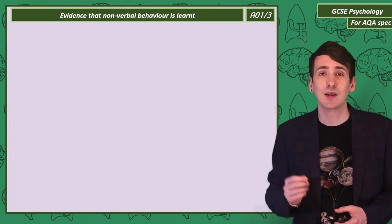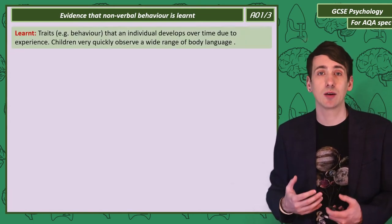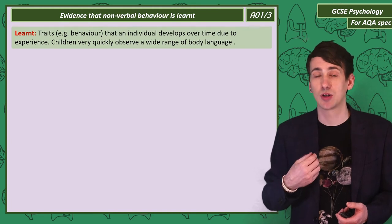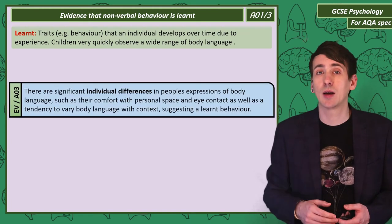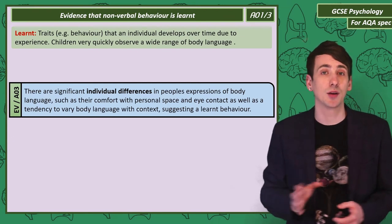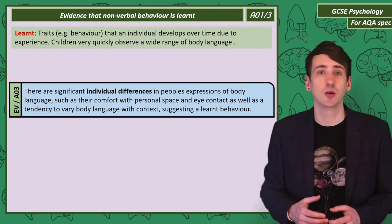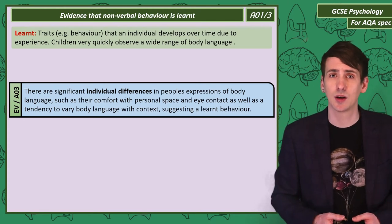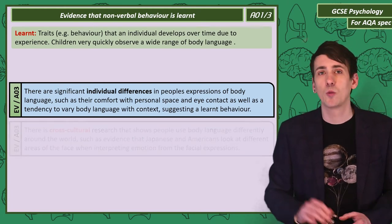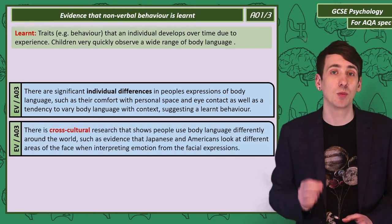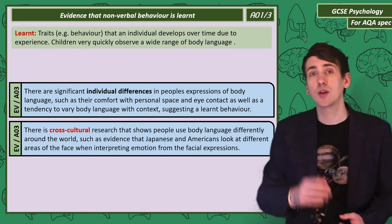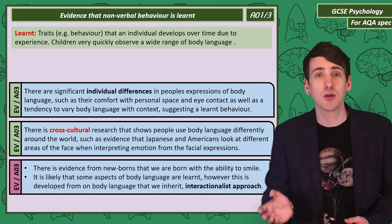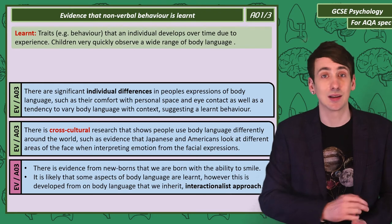The counter to body language being inherited is the idea that it is learned. Our body language develops through observing others' body language, observing people's responses to our body language, and then adapting. Strengths of the learning argument include the fact that body language varies from person to person — some people invade personal space, some use too much eye contact — and we vary our body language significantly by social context. Cross-cultural research also shows people use body language differently around the world. Criticisms include evidence from babies using body language in early life, and the possibility that an interactionist approach better explains it.